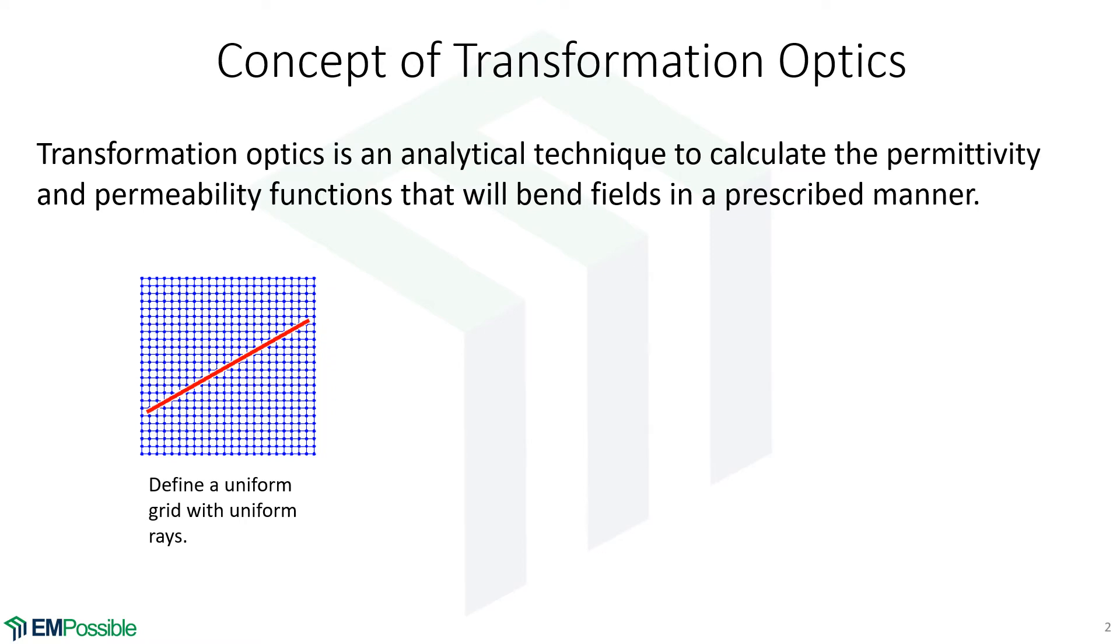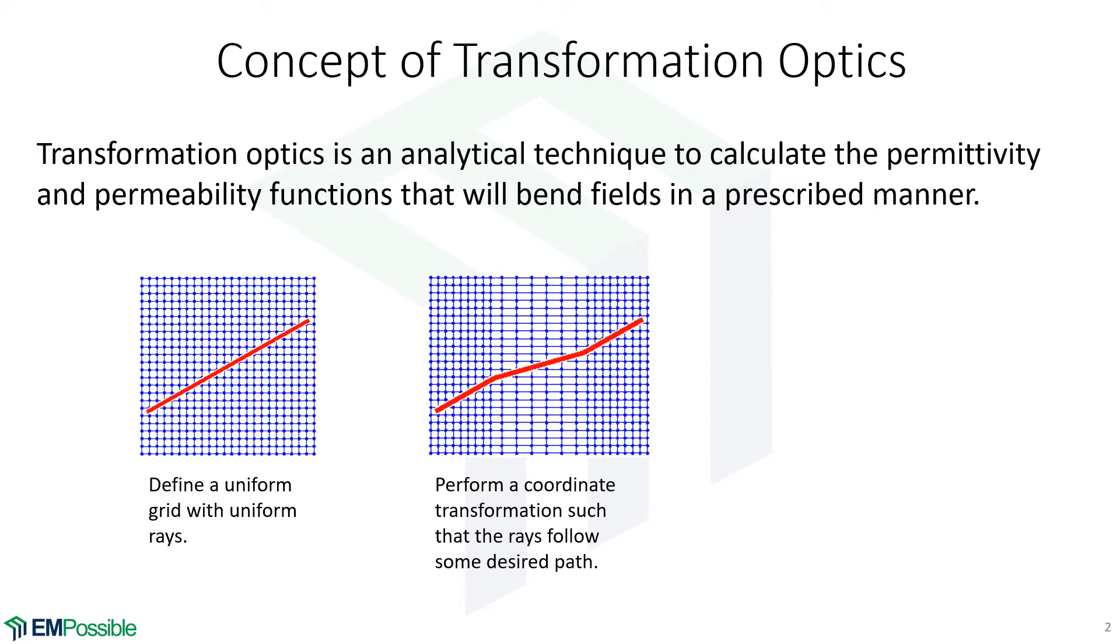We start off with our standard coordinate system and we define a line or a bunch of different lines that basically show the direction of a wave. The next thing we'll do is come up with a coordinate transform such that if we plotted the same path in this transform coordinate system, the path would bend the way that we wanted it to.